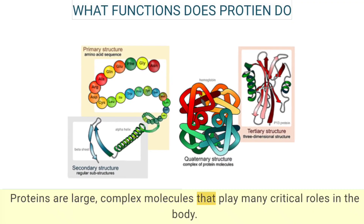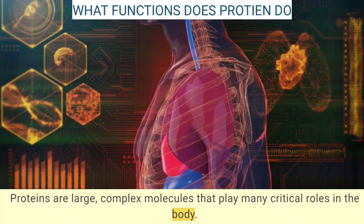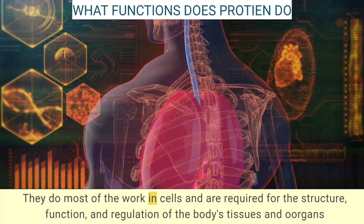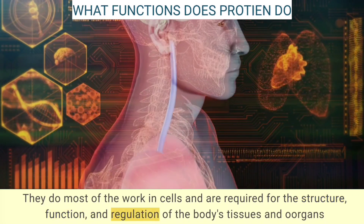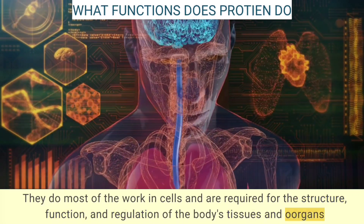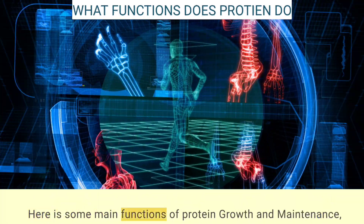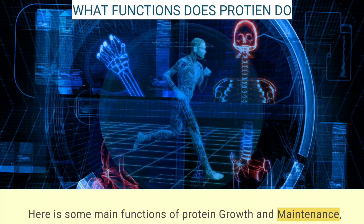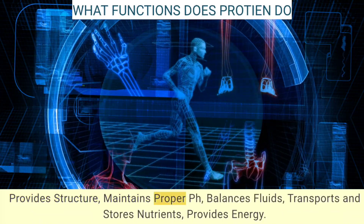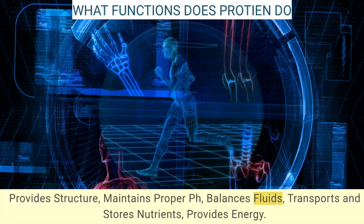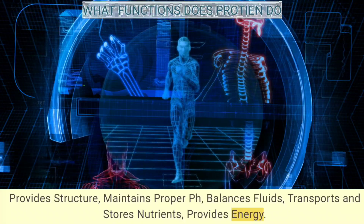Proteins are large, complex molecules that play many critical roles in the body. They do most of the work in cells and are required for the structure, function, and regulation of the body's tissues and organs. Key functions of protein include: growth and maintenance, providing structure, maintaining proper pH, balancing fluids, transporting and storing nutrients, and providing energy.